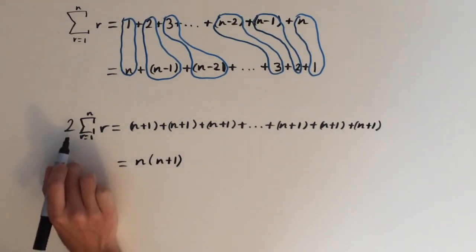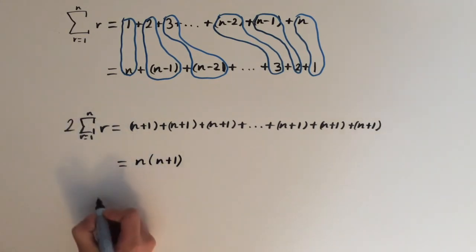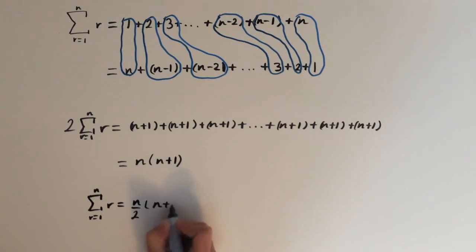Now the last step is to divide both sides by 2, and this will give us the formula: n over 2 times n plus 1.